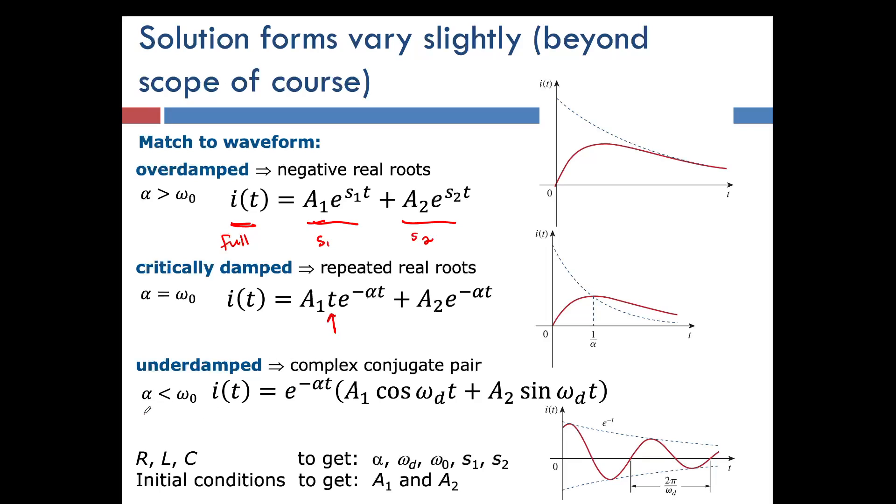The underdamped case, where alpha is less than omega, that case is actually very similar to the overdamped case, but you can do some transformations based on the Euler formula to get between the sines and the cosines. For most classes you probably don't actually need to know how to derive these and how to do that differential equation, because that's more of a differential equations problem. In my class you don't need to.